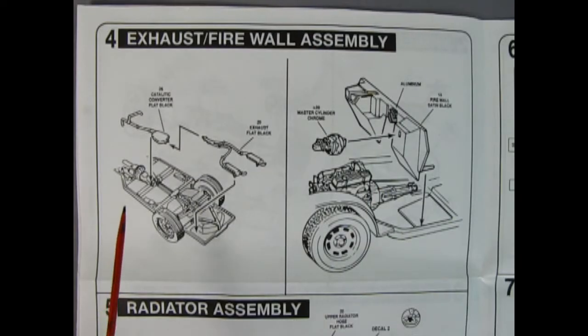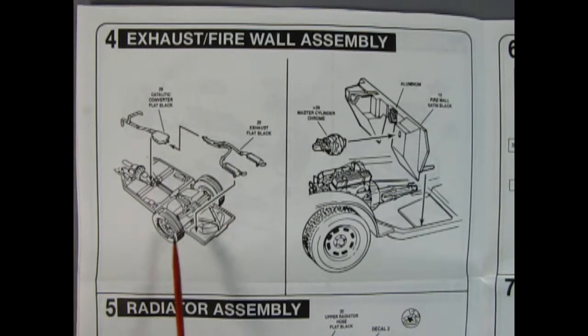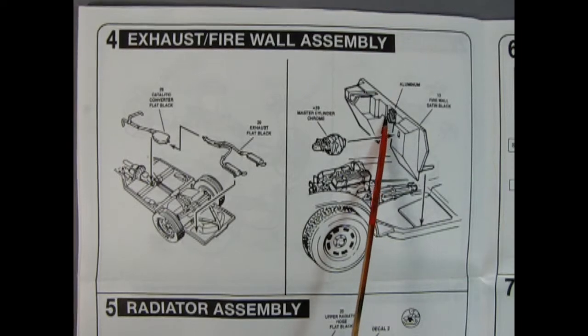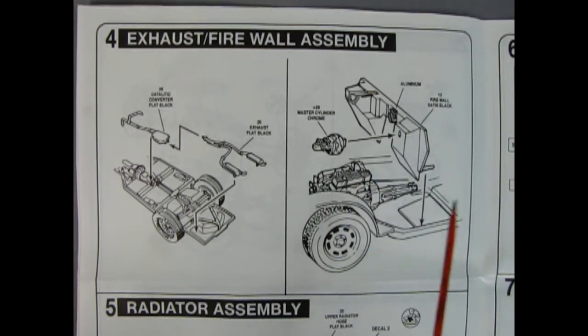After the rear suspension is in place, then the catalytic converter and exhaust pipes glue onto the back end of the exhaust pipes with the muffler, and all of that drops in onto the chassis covering the differential. Here we have our firewall and the chrome master cylinder gets glued into place. The windshield wiper mechanism is painted aluminum and then this drops into place onto the chassis just behind our engine.